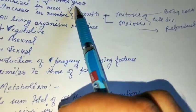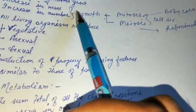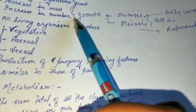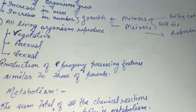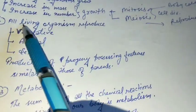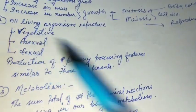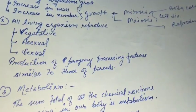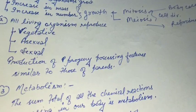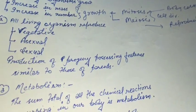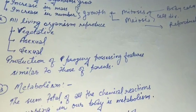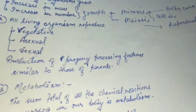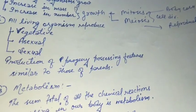So this is the first character of all living organisms: they grow either in mass or in number. The second characteristic of living organisms is reproduction.